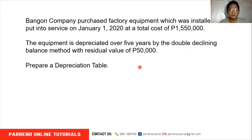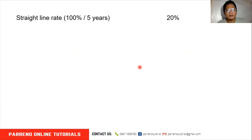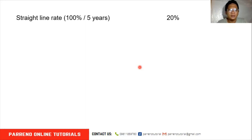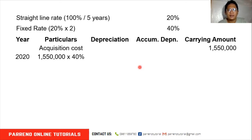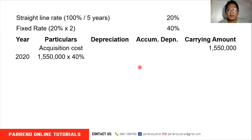Let's construct our depreciation table. The method is called double declining because we simply double the straight-line rate. To get the straight-line rate, it's 100% divided by 5 years (the useful life), which is 20%. Then we double it, so our double declining fixed rate is 40%.